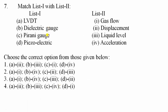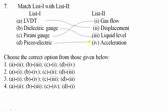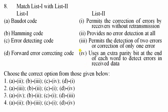Question 7: Match the following. LVDT (Linear Variable Displacement Transducer) measures displacement. Dielectric gauge measures liquid level. Pirani gauge is for gas flow measurement. Piezoelectric transducer is for acceleration measurement. The corresponding correct option is option 1.